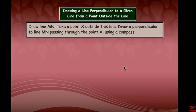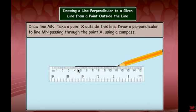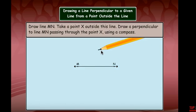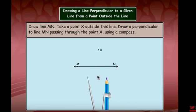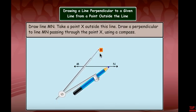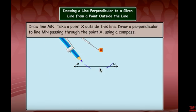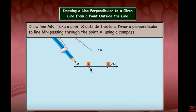Now we will draw a perpendicular to a line from a point outside the line using a compass. Draw a line MN and take a point X outside this line. Open the compass to a suitable span, then place the compass on point X and draw one arc cutting the line at one side, and then another arc cutting the other side. Name those points A and B.